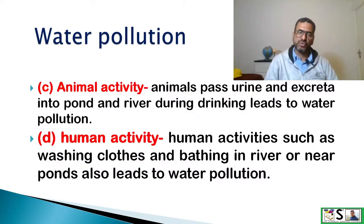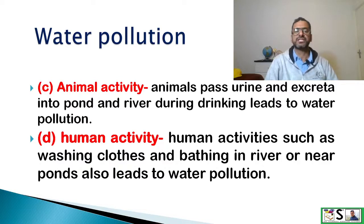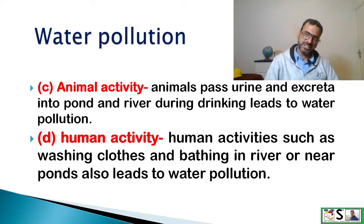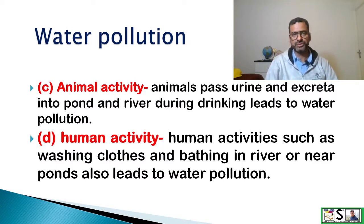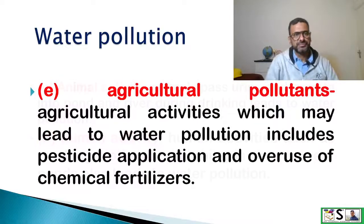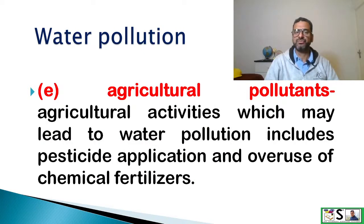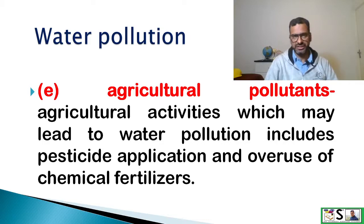The next source of water pollution is animal activities. Animals pass urine or excreta into ponds and rivers during drinking, which leads to water pollution. Human activities such as washing clothes or bathing in the river or near ponds also lead to water pollution. The next source is agricultural pollutants. Agricultural activities which may lead to water pollution include pesticide application and overuse of chemical fertilizers.